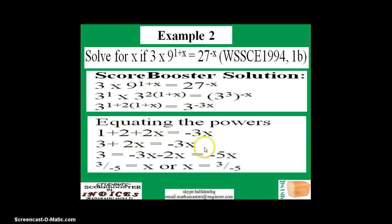What is left now is just arithmetic. We have 1 plus 2 which is 3, plus 2x equals 3x. Collect the like terms and your final answer will be x equals 3 over negative 5.